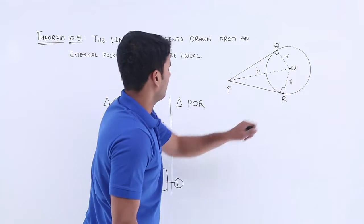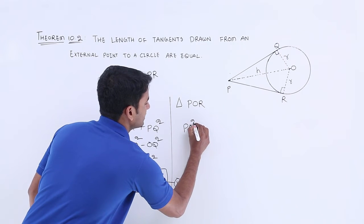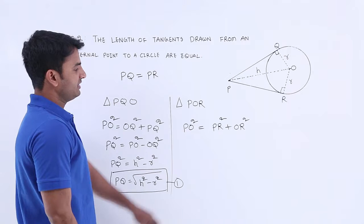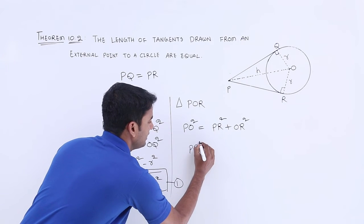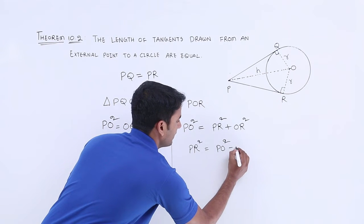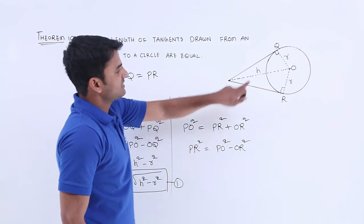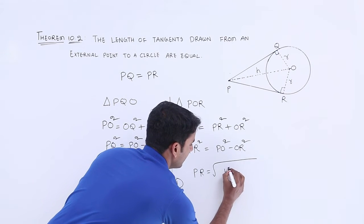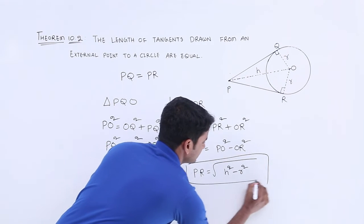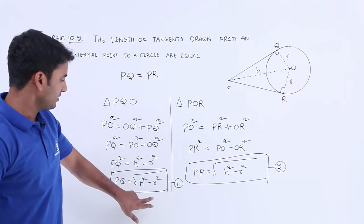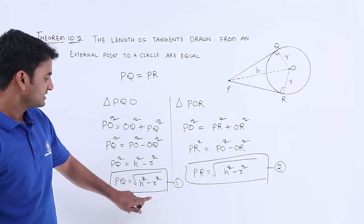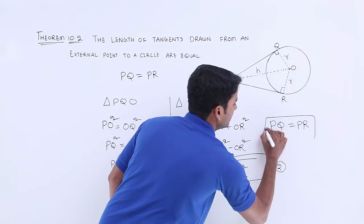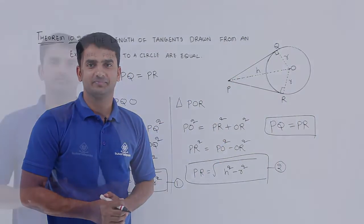From the other triangle POR, applying Pythagoras: PO squared is equal to PR squared plus OR squared. Rearranging to find PR: PR squared equals PO squared minus OR squared. Again substituting PO as h and OR as r, we get PR equals the square root of h squared minus r squared. Let us call this Equation 2. Observing Equation 1 and Equation 2, both are equal, so we can conclude that PQ is equal to PR — that is, both tangent lengths are equal.